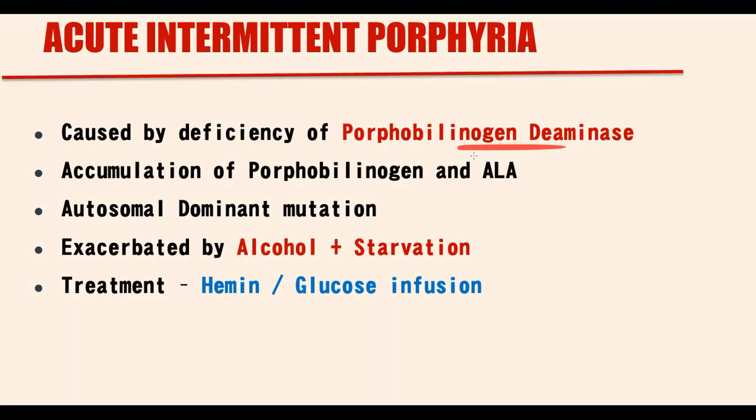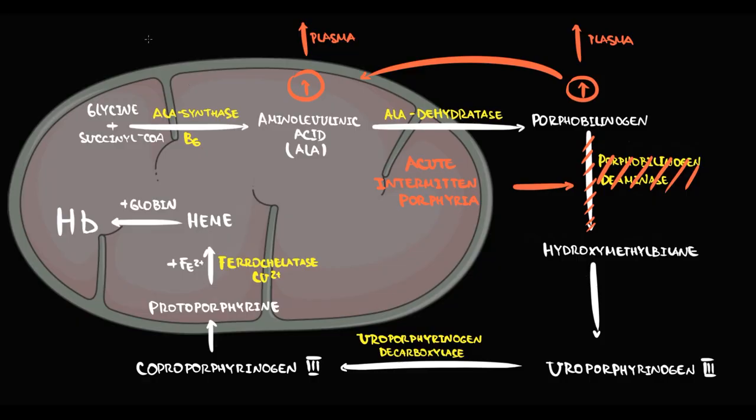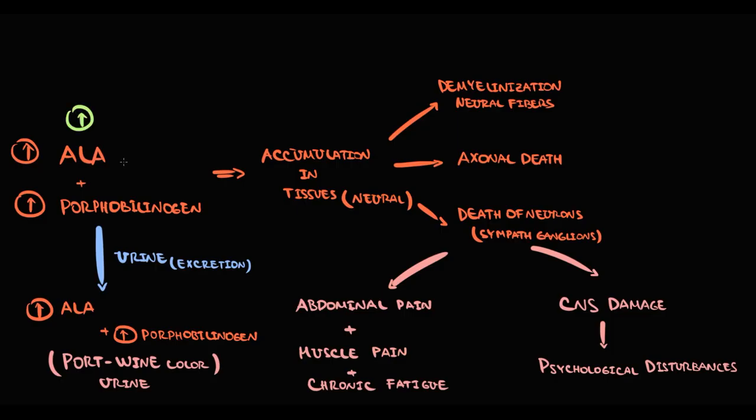We have to know that mutation in porphobilinogen deaminase is autosomal dominant. And this porphyria is precipitated by factors that stimulate ALA synthase. So the concept here is that alcohol and starvation both stimulate ALA synthase. As a result ALA synthase produces more ALA, and then from ALA more porphobilinogen is formed. But porphobilinogen deaminase in porphyria is absent. So porphobilinogen and ALA begin to accumulate even more rapidly. The more they accumulate, the more severe will be polyneuropathy. And thereby the more severe will be the clinical symptoms.